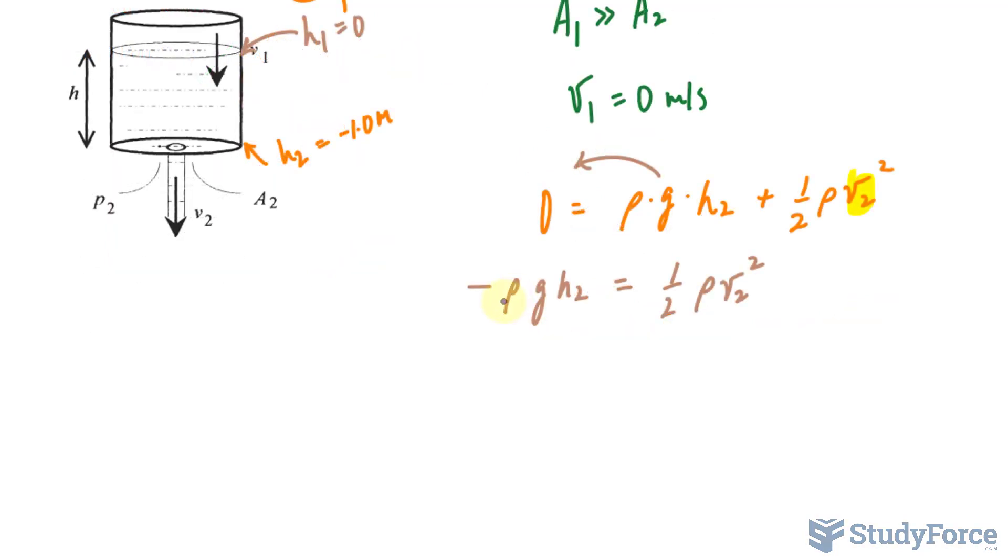Notice that the factor rho is present on both sides of the equation, so we can cancel that out. And I'll substitute negative 1.0 meters in for H sub 2, leaving us with negative from over here times negative 1.0 meters times the acceleration due to gravity being 9.8 meters per second squared.